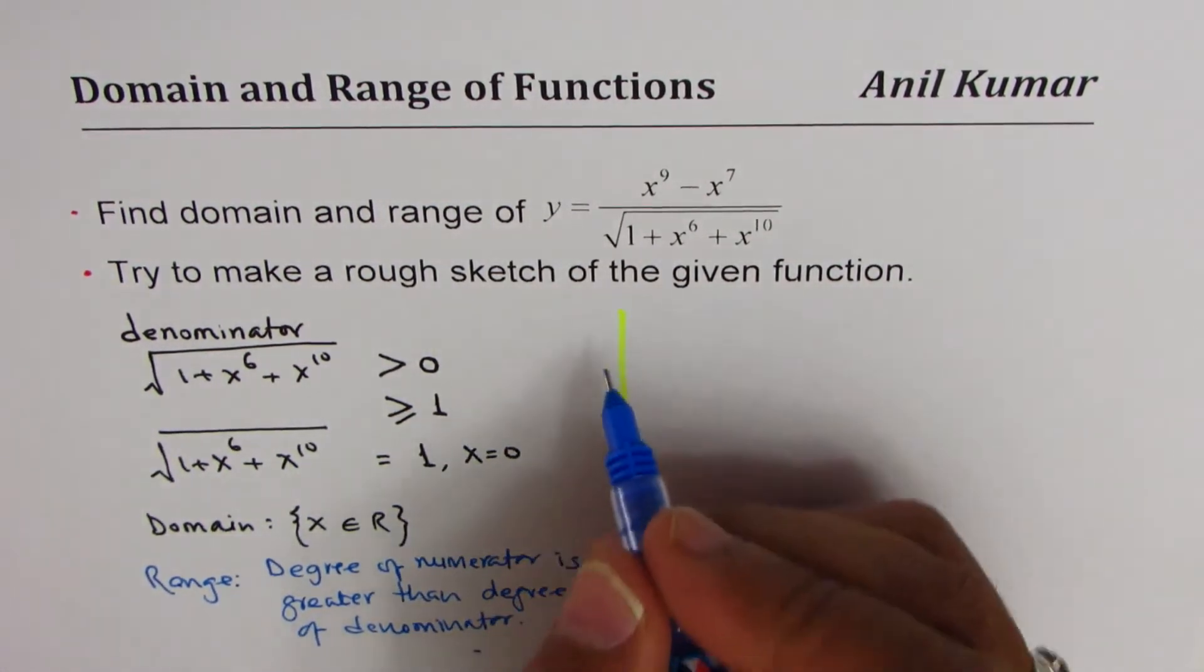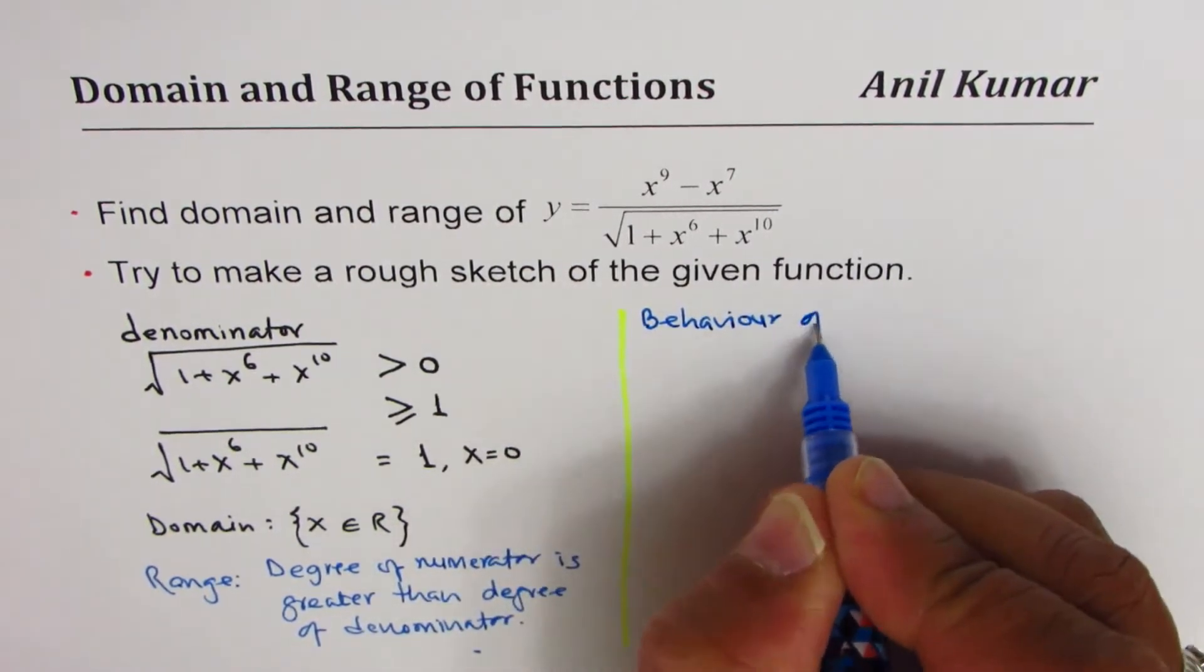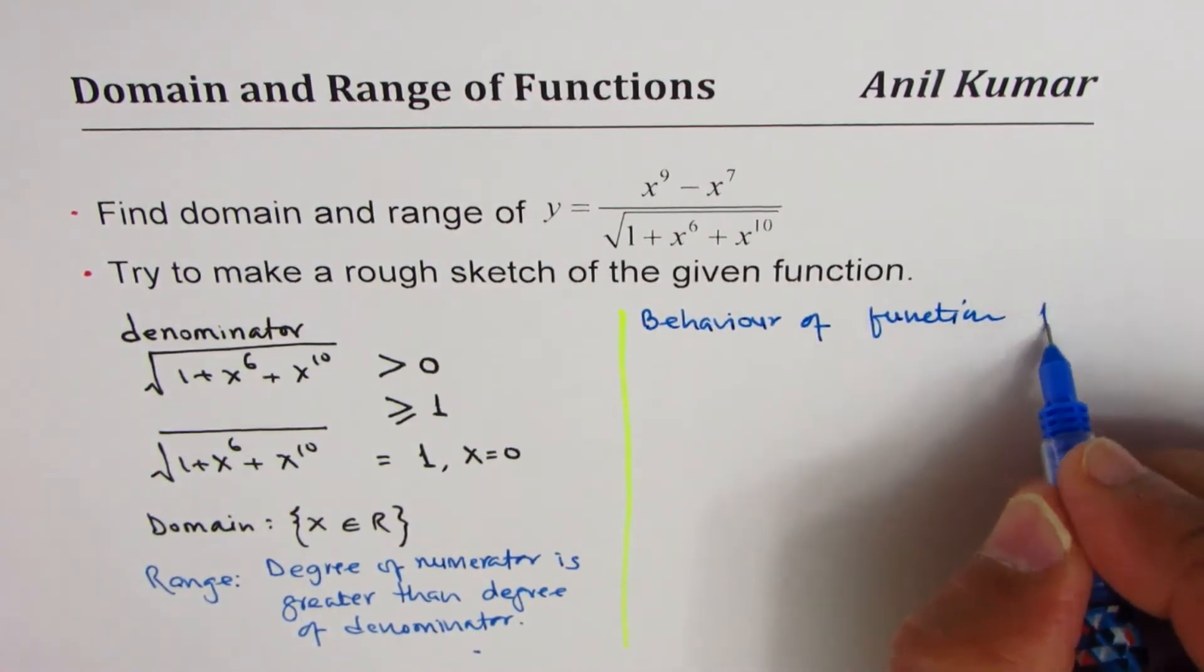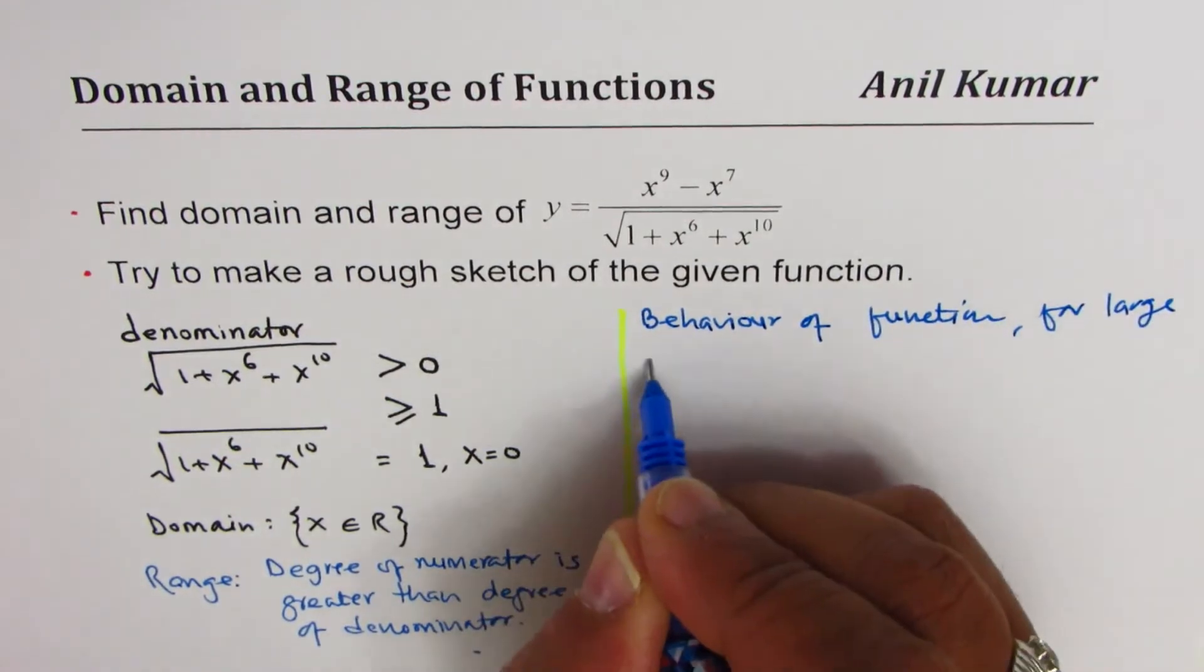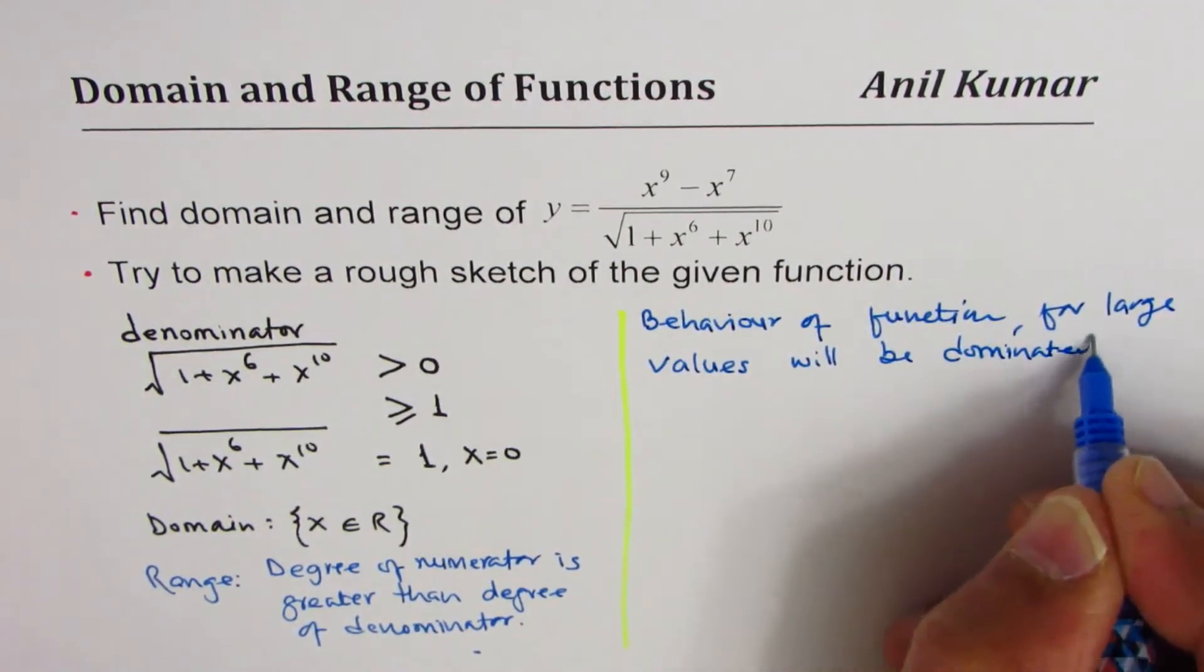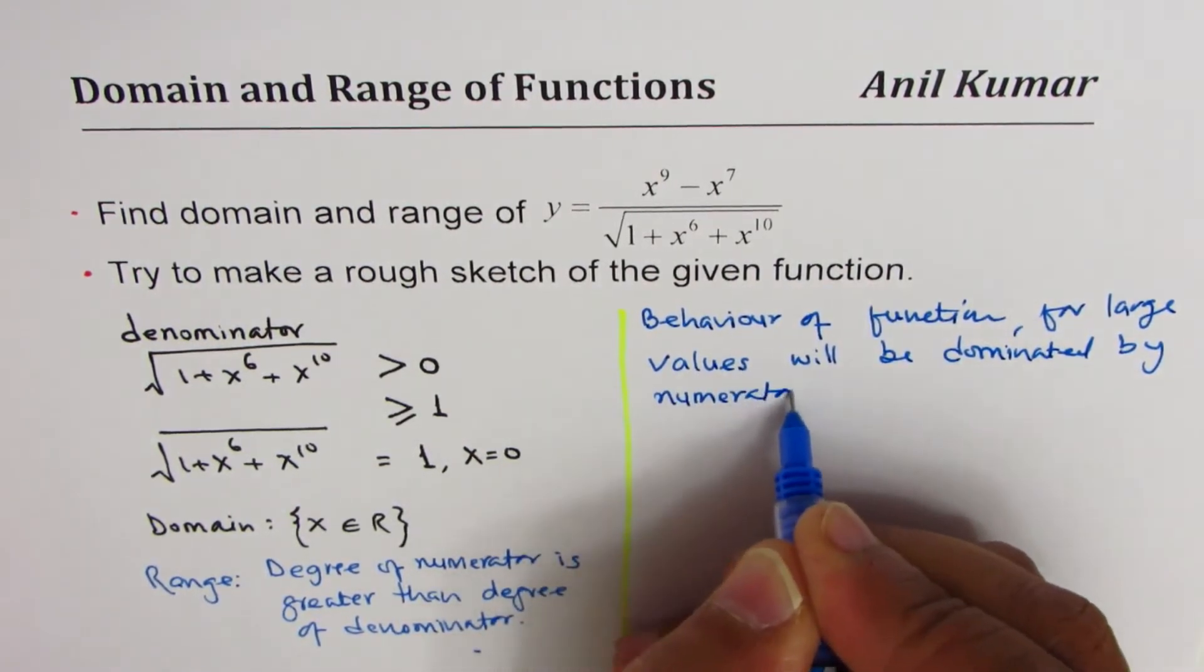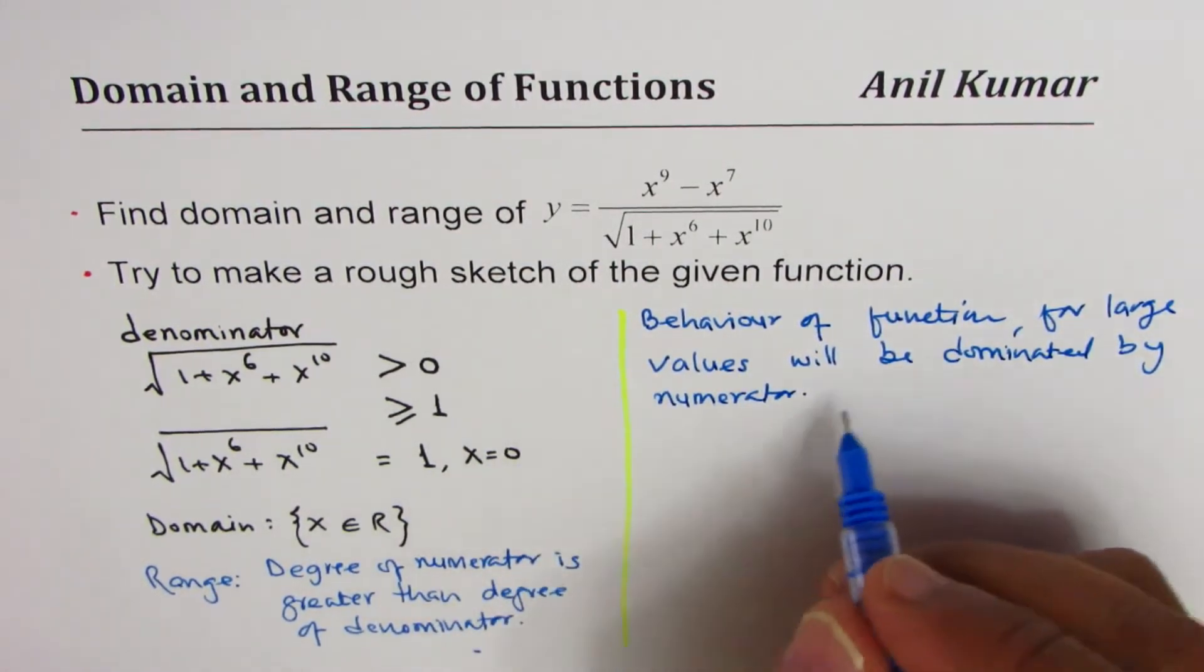So that really means that behavior of function for large values will be dominated by numerator. Now what is the numerator? We can say the numerator is x to the power of 9 minus x to the power of 7.